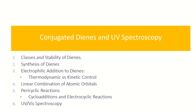Conjugated dienes are really a type of alkene — super alkene chemistry. We'll look at the classes and stability of these dienes, their synthesis, and electrophilic addition to them. Remind yourself that addition is the removal of a degree of unsaturation. We'll look at thermodynamics and kinetics, the linear combination of atomic orbitals, pericyclic reactions including cycloadditions and electrocyclic reactions — but not sigmatropics — and then UV-Vis spectroscopy.